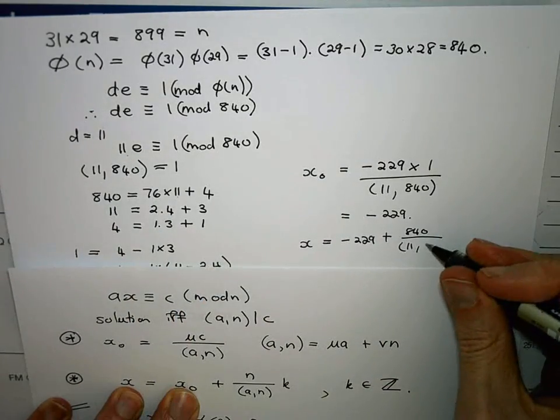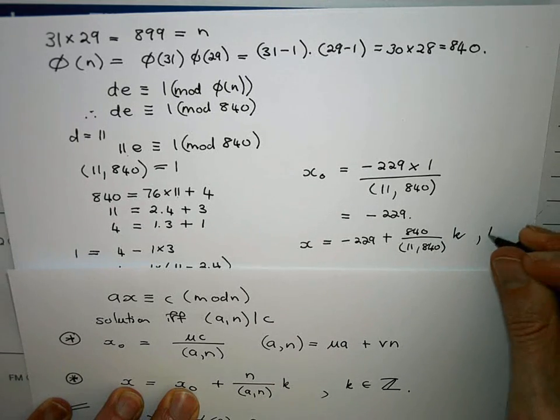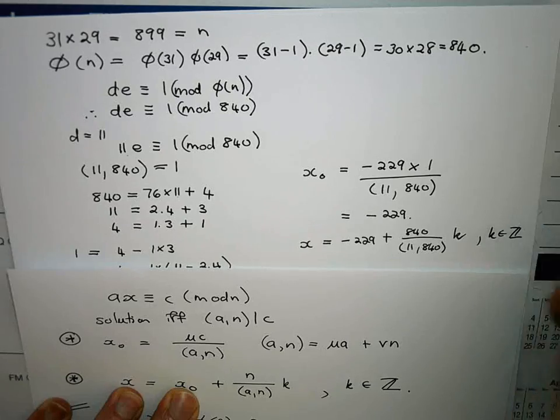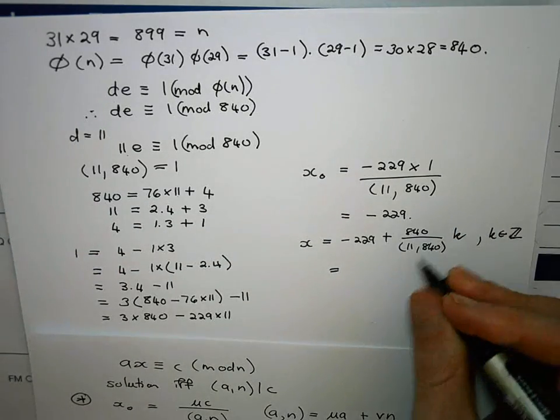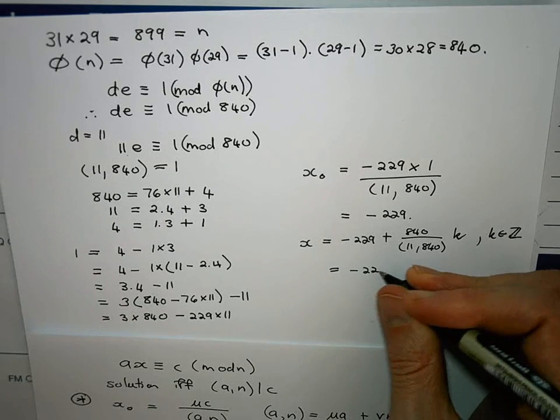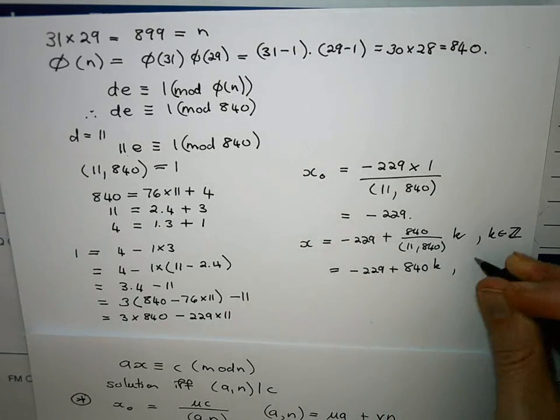So the GCD of 11 and 840, multiply that by any k in the integers. Well in this case our GCD is just 1 so this is going to be minus 229 plus any multiple of 840.